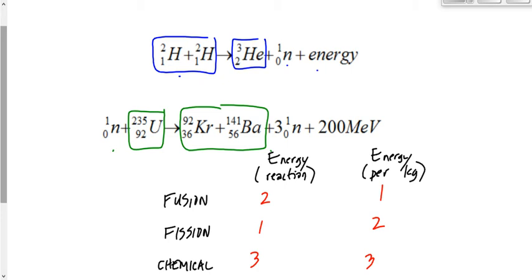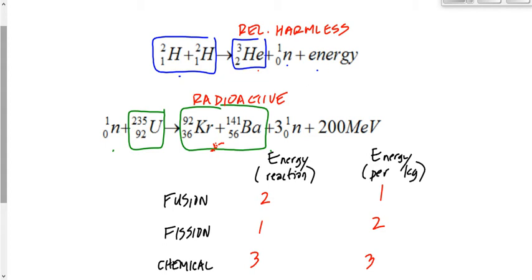What else do we know? The products of fission are radioactive and harmful, whereas the products of fusion decay really, really quickly. It is radioactive, but it decays so quickly that you don't really have radioactive waste left behind — the products are relatively harmless. About half an hour after the reaction takes place, it's essentially decayed to normal background levels.